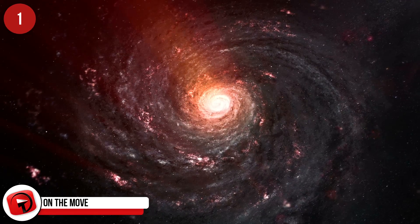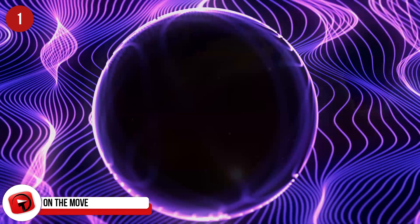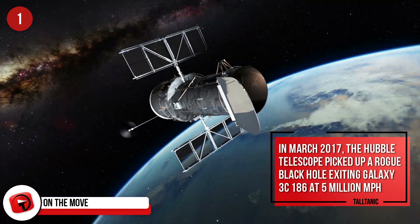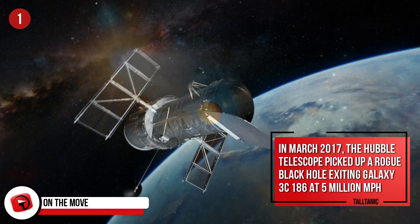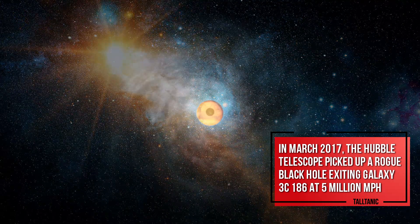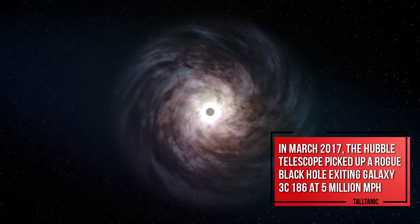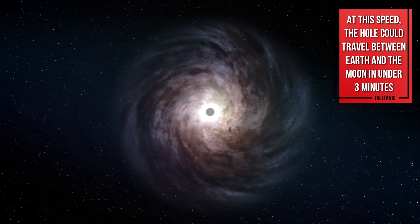On the move. Rogue black holes would be a problem for us here on Earth, purely because they are so unpredictable. It was always assumed that black holes were stationary. But in March 2017, the Hubble telescope picked up a rogue black hole, exiting Galaxy 3C-186 at 5 million miles an hour. At this speed, the hole could travel between Earth and the moon in under three minutes.